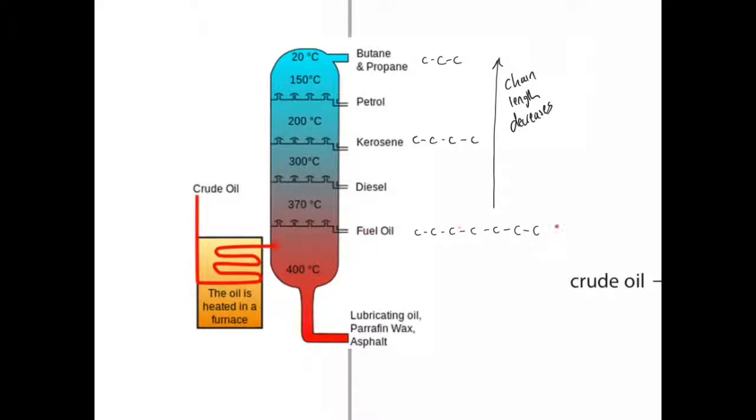The hydrocarbons with the longest chain length condense at the bottom where they have the high boiling points. At this point, it's still hot enough to keep them as a gas. But as they rise, they condense. As it gets a little bit cooler, they become a liquid. But at the top, it's still very hot for some of the smaller chain lengths. They're still gas until they reach the top where they condense. So as you go to the top, you find fractions with smaller carbon chains.